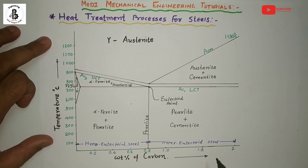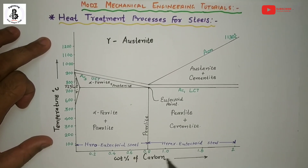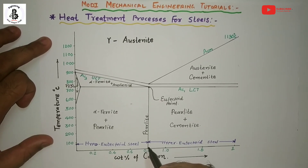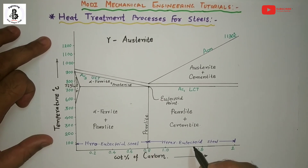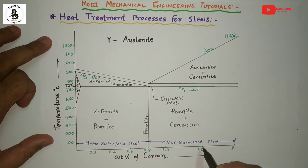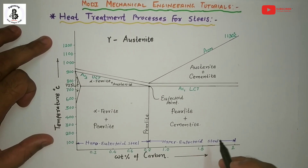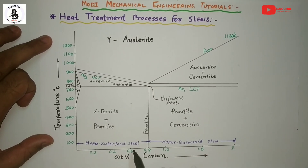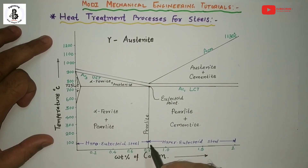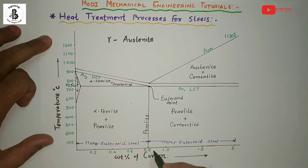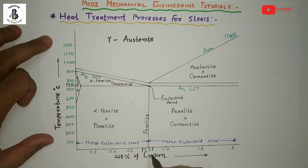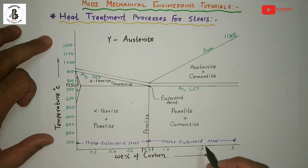So you can say that it will be the hypo-eutectoid steel, eutectoid steel, and hyper-eutectoid steel. If you want to learn in detail about hypo-eutectoid steel, eutectoid steel — also known as 0.8% carbon steel — or hyper-eutectoid steel, you will find a link in my description box.